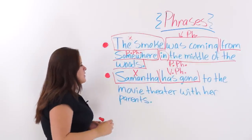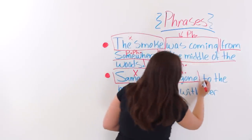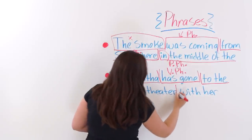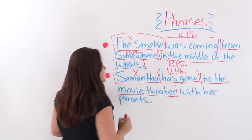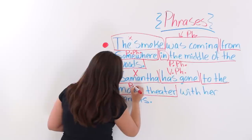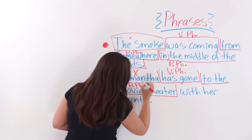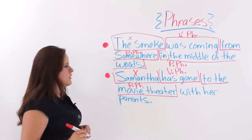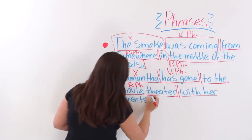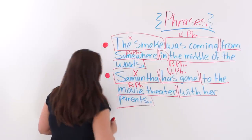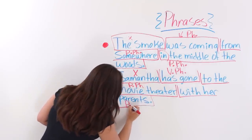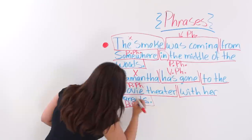'Has gone.' Next, we have a preposition: 'to'. 'To the movie theater' — this means that this is a prepositional phrase. 'With her parents' — we have another preposition and its complement, so it's another prepositional phrase.